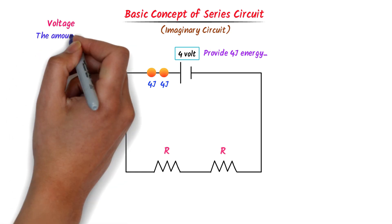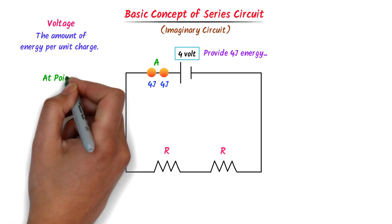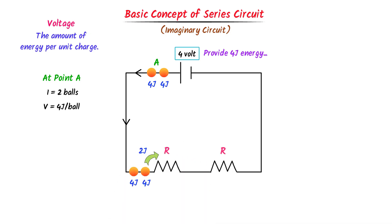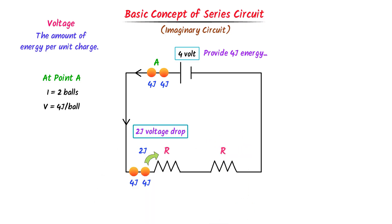We know that this battery will provide 4 joules of energy to each ball. Remember that voltage is the amount of energy per unit charge. Here, let this be point A. We say that at point A, the current is two units or two balls, and the voltage is 4 joules per ball. As a result of this energy, these two unit charges or two balls will start moving and current is produced. Now here is a resistor — I call the resistor a rubber R because they always steal energy from the charge. Let this resistor consume 2 joules of energy from this ball. We call it a 2-joule voltage drop because this resistor absorbed 2 joules of energy.